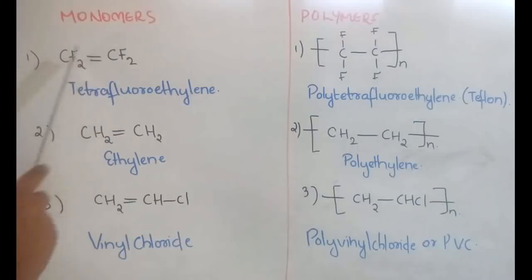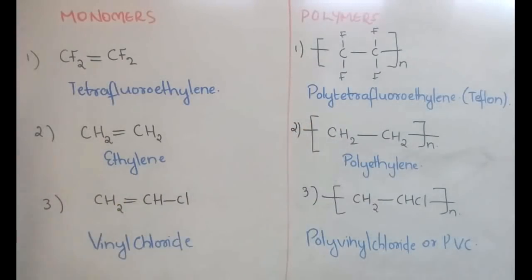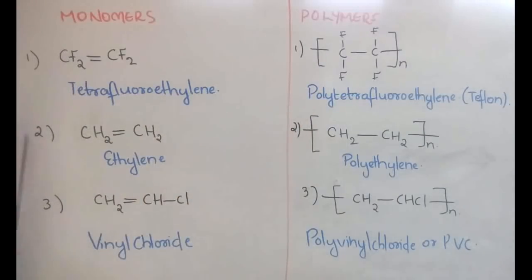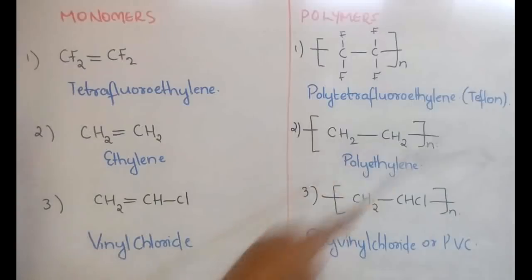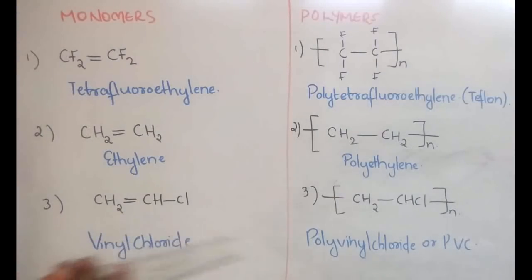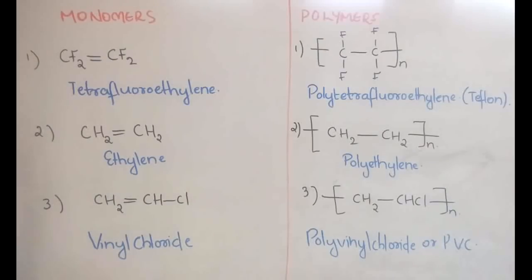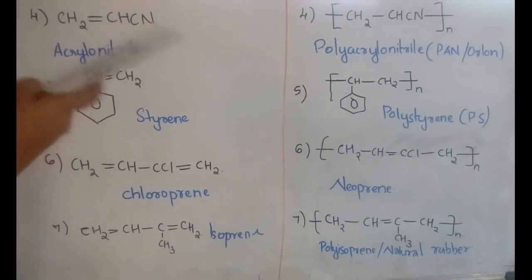Starting with monomers and polymers: first, tetrafluoroethylene — having four fluorine atoms and a double bond — polymerizes to give polytetrafluoroethylene, commonly known as Teflon, used in non-stick cookware. Its representation is (CF₂–CF₂)ₙ. Second, ethylene (CH₂=CH₂) gives polyethylene, represented as (CH₂–CH₂)ₙ. Third, vinyl chloride (CH₂=CHCl) gives PVC — polyvinyl chloride — represented as (CH₂–CHCl)ₙ.